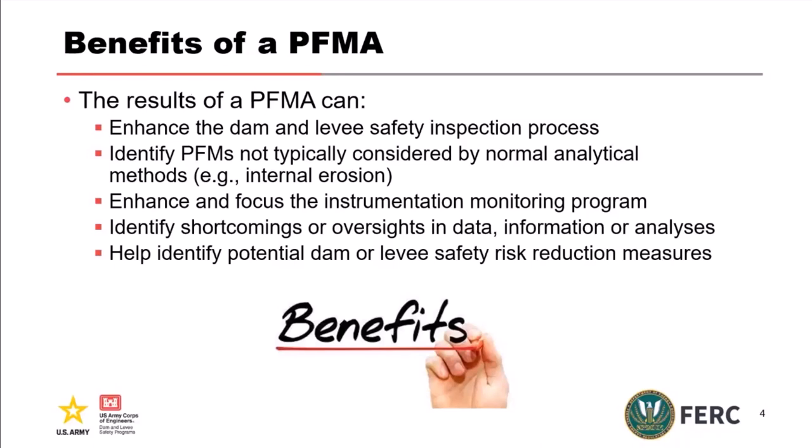The PFMA can enhance and focus our instrumentation and monitoring program. As we describe how a particular failure mode starts, continues, progresses, and maybe leads to breach, we ask: where is our earliest opportunity to see that the process is actually active and increasing? Better not to try to catch it at the very end — you're left with heroic intervention or reservoir drawdown. We want to capture it as early as possible. So how would we actually monitor for that? Are there instruments or other installations that could give us a clue that something is happening?